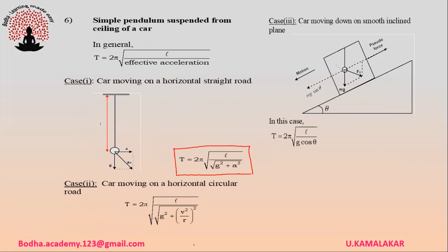Car moving on a horizontal circular road. In this case, the acceleration equals the centripetal acceleration, which equals v²/r. Hence, the time period of the simple pendulum is T = 2π × √(l / √(g² + (v²/r)²)).